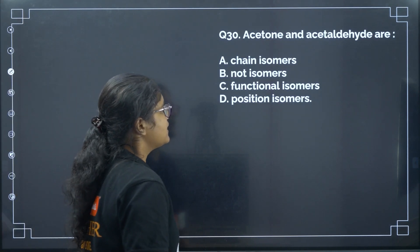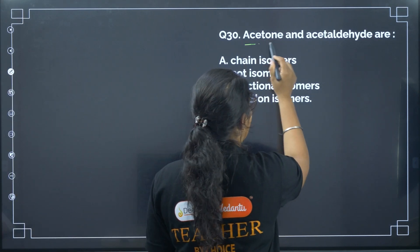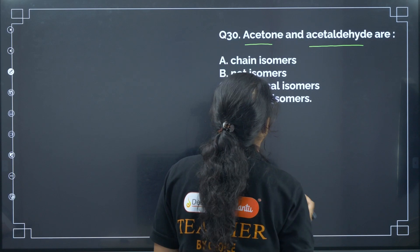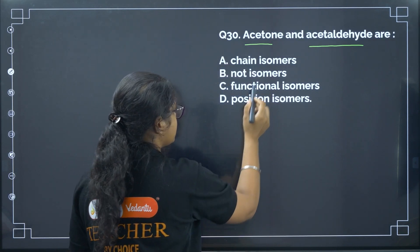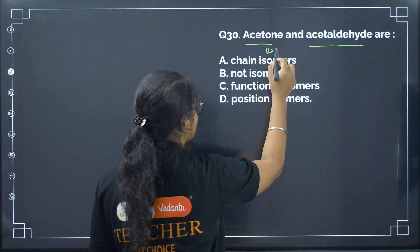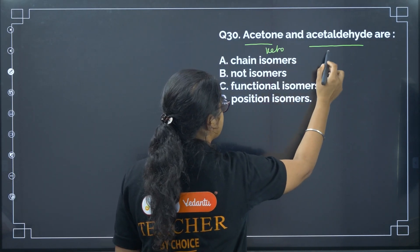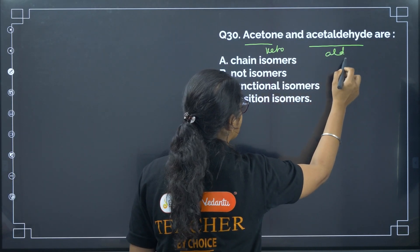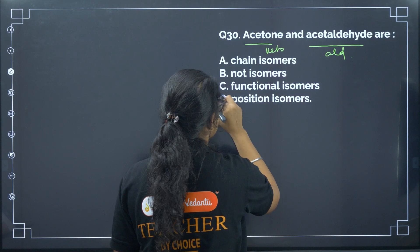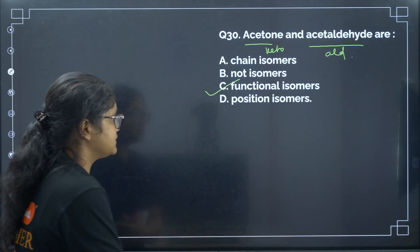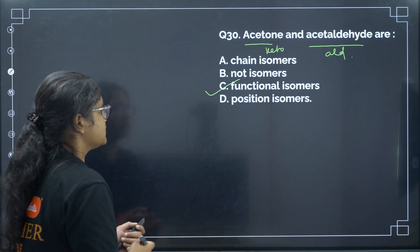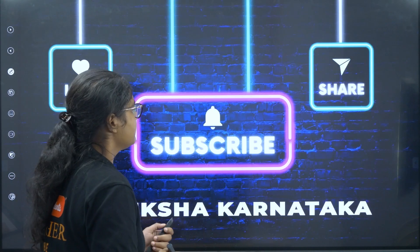Last question: acetone and acetaldehyde are related as? Acetone is a ketone and acetaldehyde is an aldehyde — they have the same molecular formula but different functional groups. They are functional isomers. Correct answer: option C.